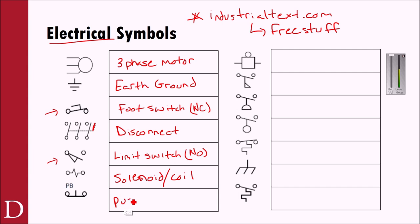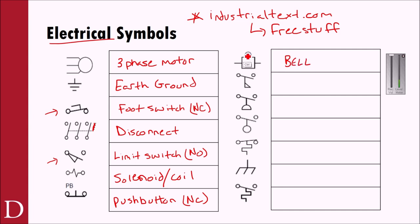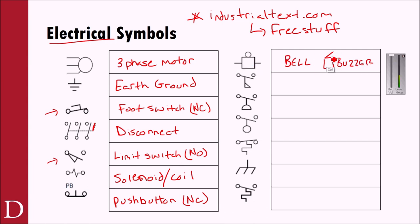This is a push button, drawn in its closed state — so it's normally closed. This one is a bell — you don't see it all the time; it has a little round part on top. And there's a buzzer — also drawn with a square on the bottom but with a little flapper piece. So you've got a buzzer and a bell.